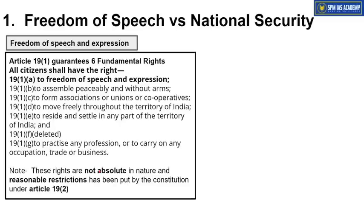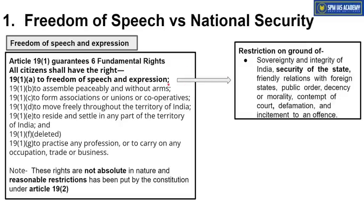There are reasonable restrictions applicable on these rights as per the Constitution itself under Article 19(2). Article 19(1) gives six sets of rights in different domains, while Article 19(2) puts certain restrictions over those rights. The grounds for reasonable restrictions on freedom of speech and expression include sovereignty and integrity of India, security of the state, friendly relations with foreign states, public order, decency or morality, contempt of court, defamation, and incitement to an offence.